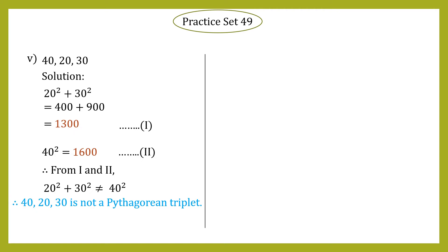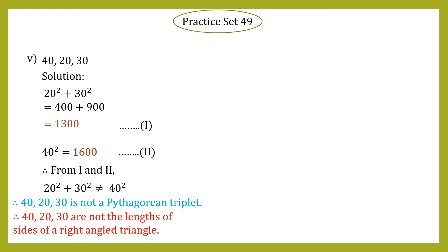We conclude that 20, 30, and 40 is not a Pythagorean triplet. Since it is not a Pythagorean triplet, these numbers do not satisfy Pythagoras theorem, meaning the triangle is not a right angle triangle. Therefore, 40, 20, 30 are not the lengths of sides of a right angle triangle.